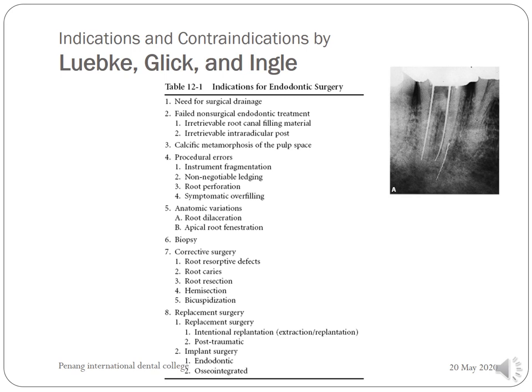When is surgical endodontics indicated and when is it contraindicated? Indications include: failed non-surgical endodontic treatment; calcific metamorphosis in the pulp space where root canal treatment is virtually not possible; and procedural errors such as instrument fragmentation, inability to negotiate ledges created, root perforation, or symptomatic overfilling that has been present and irritating the tissues for a long time.